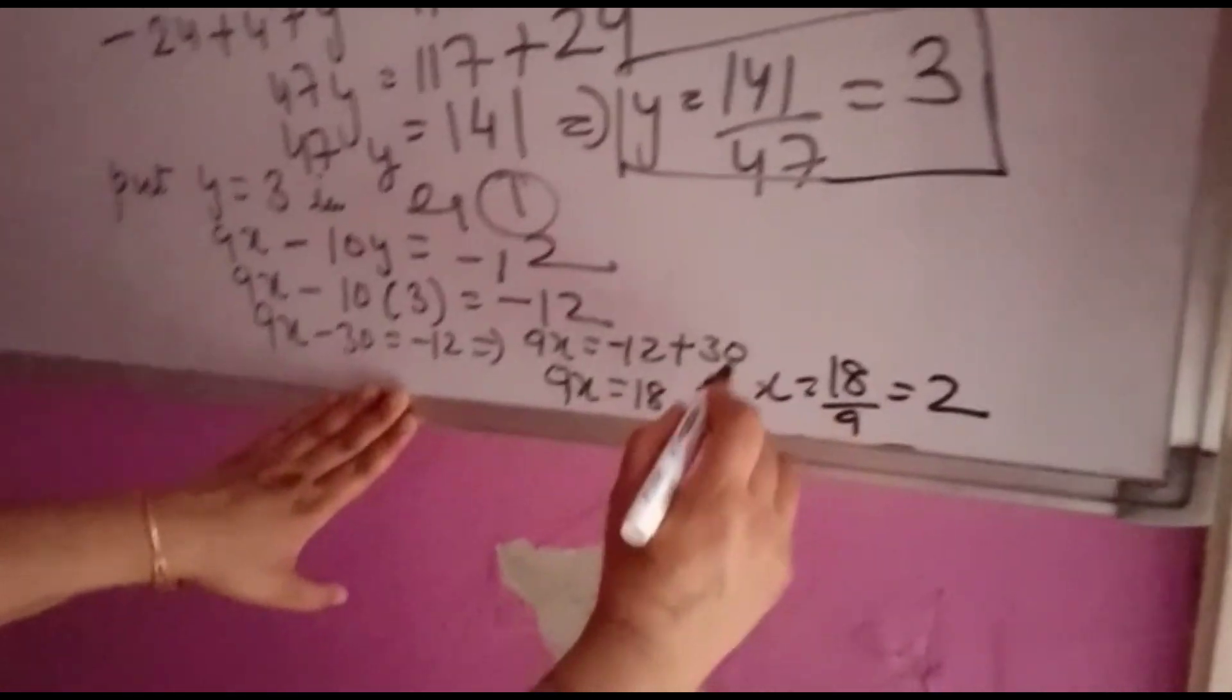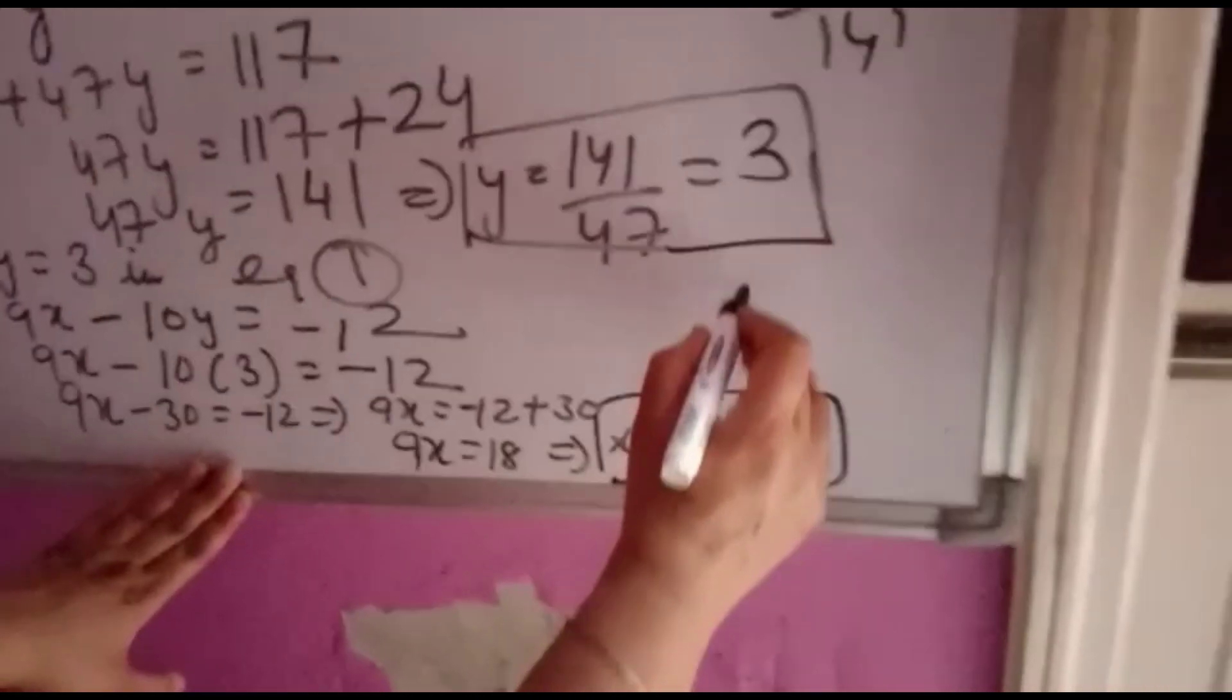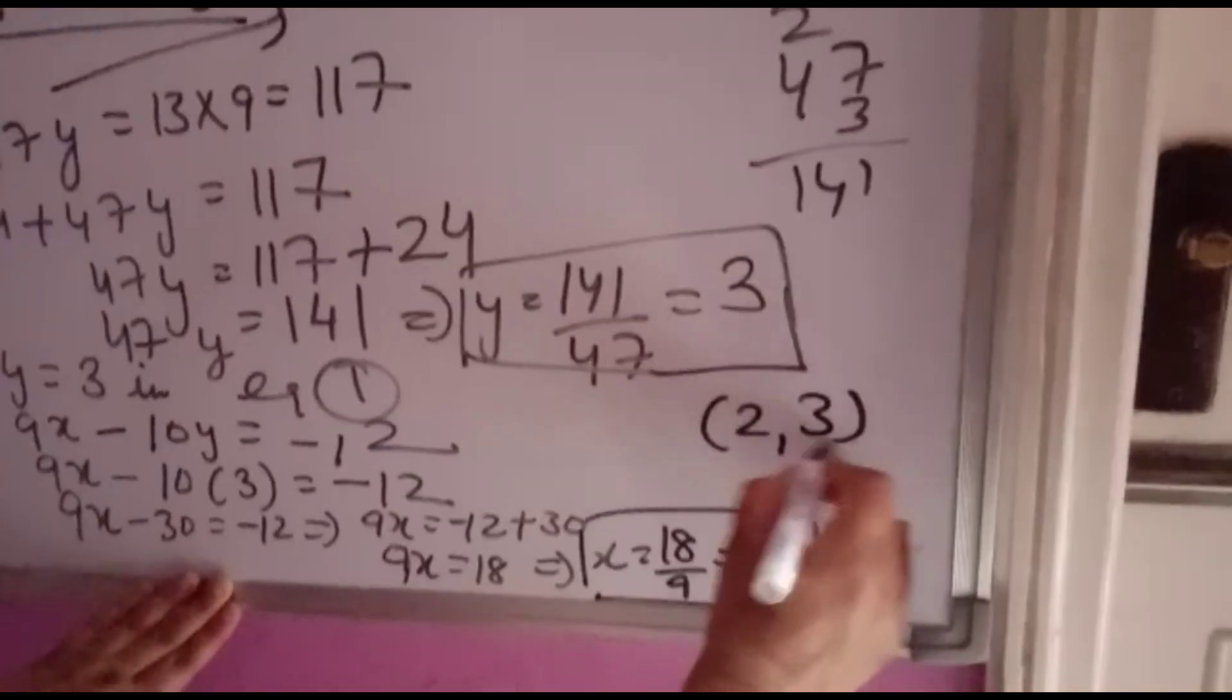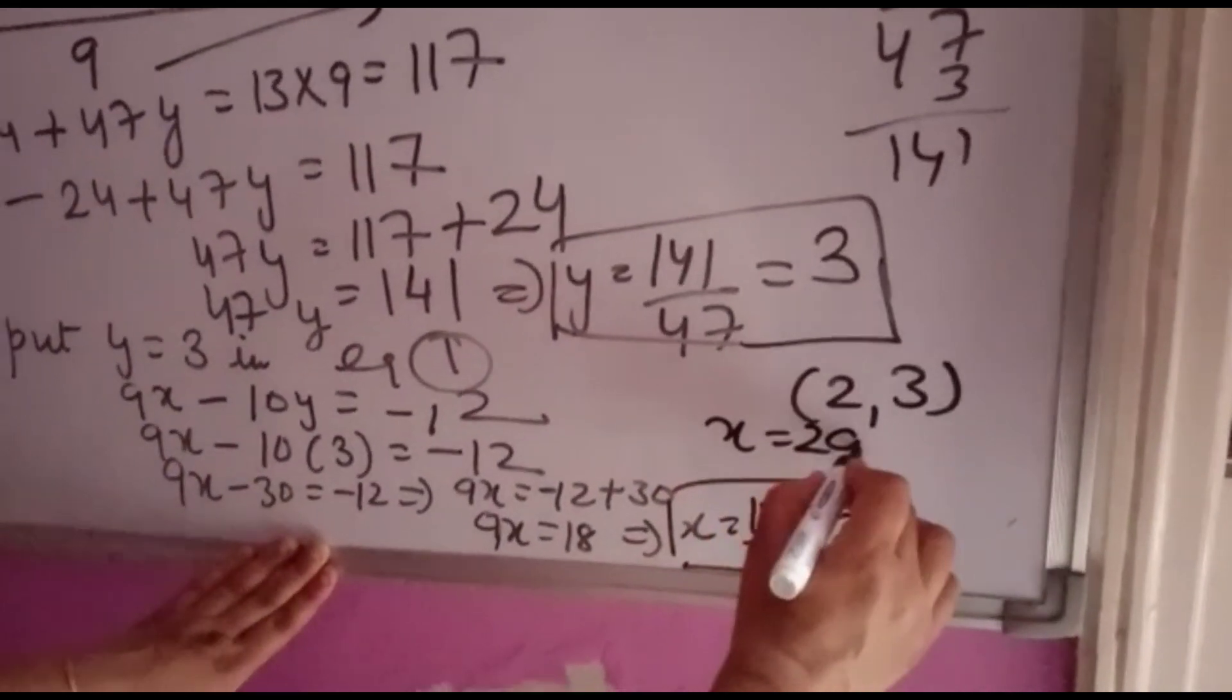So solution is x equal to 2 and y equal to 3. You can write in this form also and this form also. So both are correct.